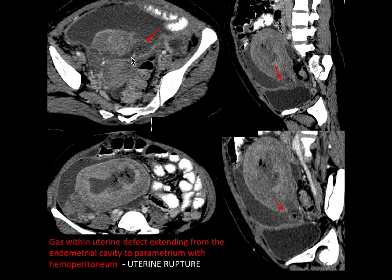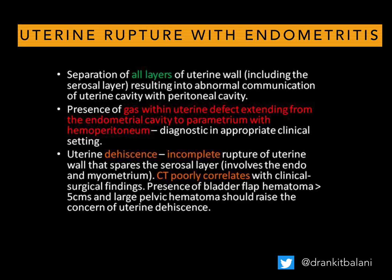So there is a huge defect in the anterior lower segment of the uterus with fluid in continuity with the uterine endometrial cavity and air pockets. And you can see mild enhancement of the endometrial lining as well. So all these features are consistent with uterine rupture with endometritis.